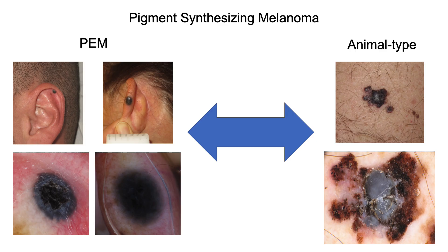Let's start with pigmented epithelioid melanocytoma (PEM) and animal type melanoma. These two variants represent the edges of a spectrum of low-aggressive melanomas, histologically characterized by pleomorphic heavily pigmented cells, called pigment-synthesizing melanomas. PEM is classified as a melanocytic tumor with low malignant potential, while animal type melanoma is a clear-cut melanoma histologically, but with a more indolent behavior than common melanoma variants.